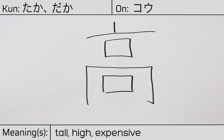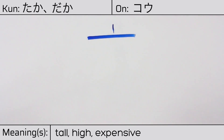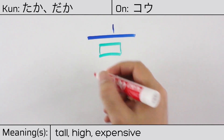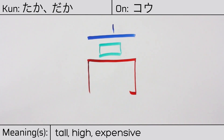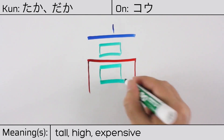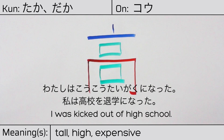This character is made up of the following radicals or parts: the lid or top radical nabebuta, mouth or kuchi in the center, the enclosure radical, and a final mouth radical. You can remember this kanji by the fact that it looks like a tall building. Our example sentence is: Watashi wa koukou wo taegakuninatta — I was kicked out of high school.